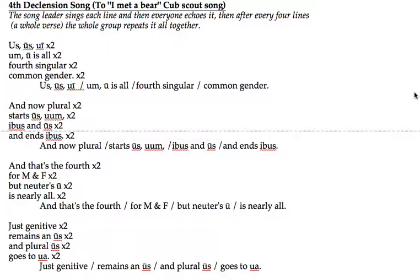And that's the fourth. Four M and F. But neuter's oo is nearly all. [Echo:] And that's the fourth. Four M and F. But neuter's oo is nearly all. Just genitive remains an ooze, and plural ooze goes to oo. [Echo:] Just genitive remains an ooze, and plural ooze goes to oo.